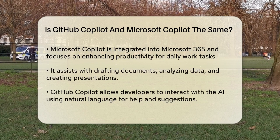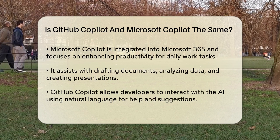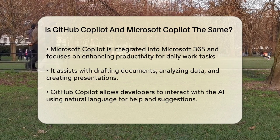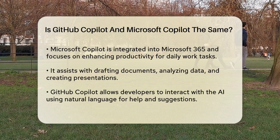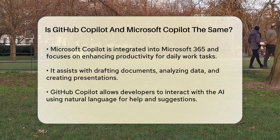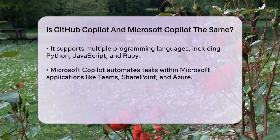One of the key differences is how they interact with users. GitHub Copilot allows developers to chat with the AI directly, ask for help using natural language, and get suggestions as they type. It also supports a wide range of programming languages, including Python, JavaScript, and Ruby, making it highly flexible for different coding projects.